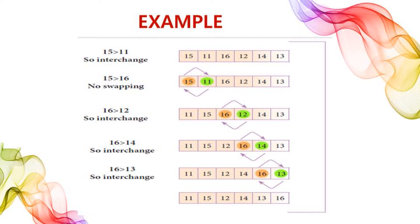Continuing the first pass: 15 and 16 are compared — no swap needed. Then 16 and 12 are compared and swapped, giving 11, 15, 12, 16, 14, 13. Next, 16 and 14 are swapped: 11, 15, 12, 14, 16, 13. Finally, 16 and 13 are swapped: 11, 15, 12, 14, 13, 16. After the first pass, the largest element 16 is in its correct position, but the remaining elements are not fully sorted.